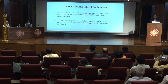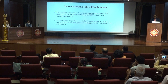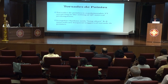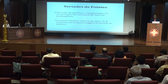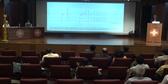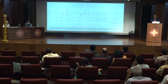Torsades de pointes is a term specifically reserved for polymorphic VT occurring in the setting of QT interval prolongation. An irregular rhythm with long-short RR intervals is a frequent trigger of torsades de pointes. This ECG shows a short run of polymorphic VT preceded by sinus bradycardia, ventricular bigeminy, and a prolonged QT interval.